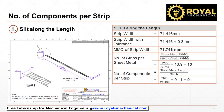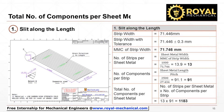Divide the length of the sheet metal by the pitch to calculate the number of components that can be produced per strip. We will get 91.1 components. Practically, 0.1 component is of no use; hence we can utilize only 91 components per strip. Multiply the number of strips per sheet metal and the number of components per strip to calculate the total number of components per sheet metal. By slitting the sheet metal along its length, we can produce 1183 components.